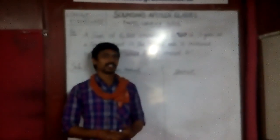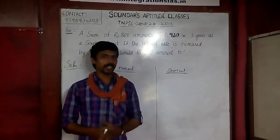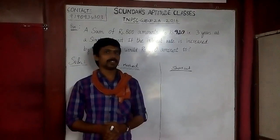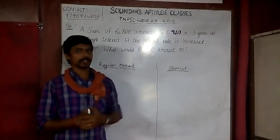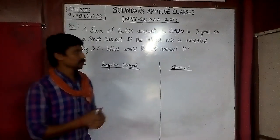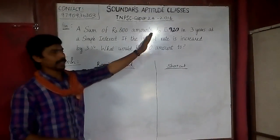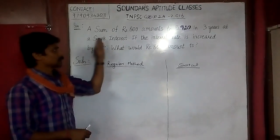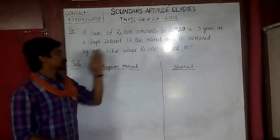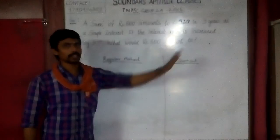Hi everyone. TNPC 2016, problem 7. We will find the answer using Simple Interest. A sum of Rs.800 amounts to Rs.920 in 3 years at Simple Interest. If the interest rate is increased by 3%, what would Rs.800 amount to?